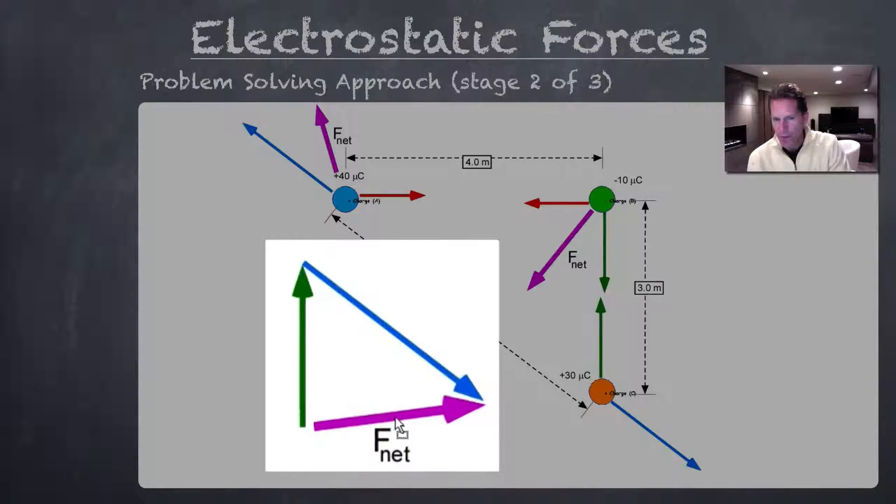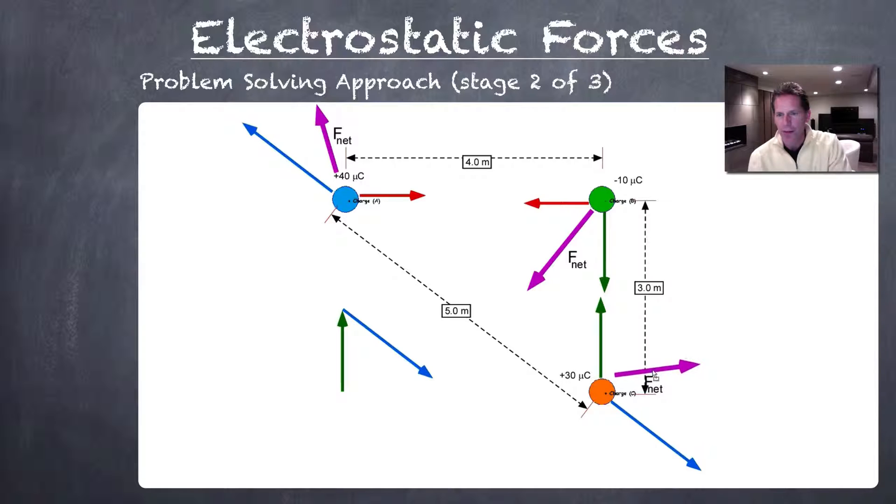We'll transfer that onto our diagram as a reminder that this is the direction we would expect the 30 microcoulomb charge to move or accelerate if it was given the chance.